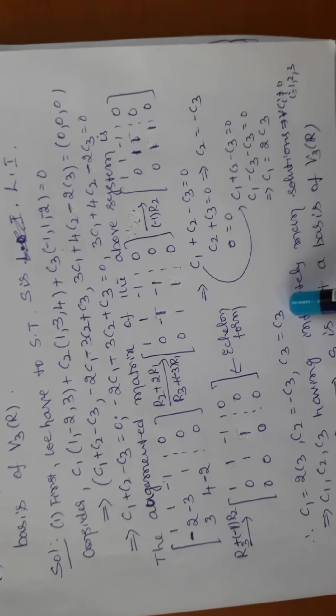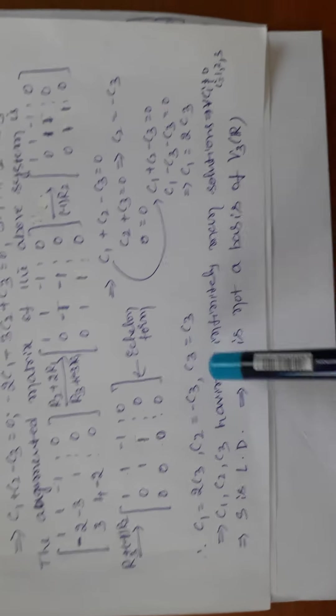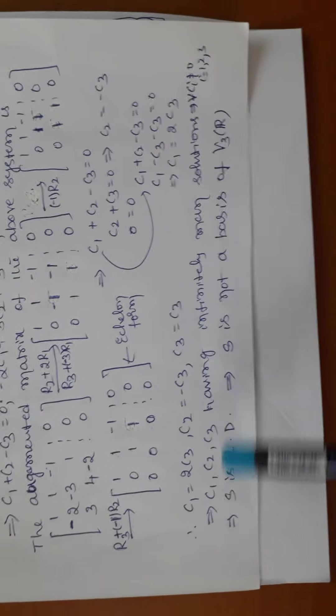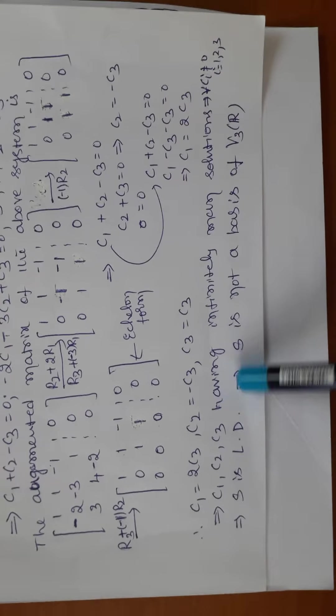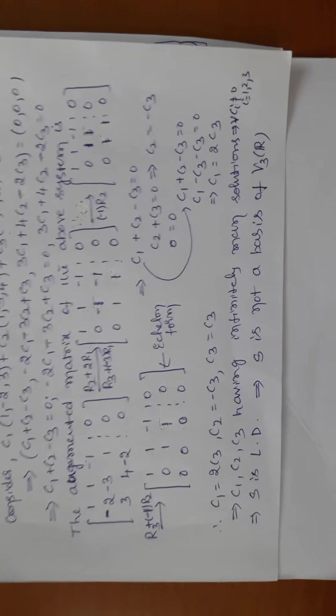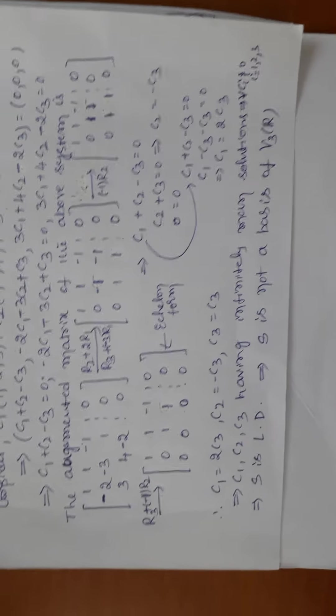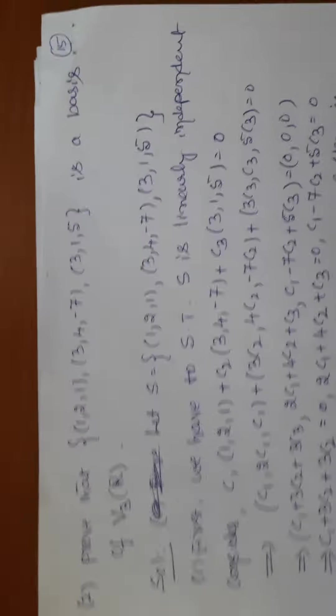Writing the system from the echelon form, from the second equation we get c2 in terms of c3, and substituting back we get c1 also in terms of c3. Finally: c1 = -2c3, c2 = -c3, c3 = c3. Since c1, c2, c3 are not all zero and there are infinitely many solutions, the vectors are linearly dependent — therefore S is NOT a basis of V3(R).